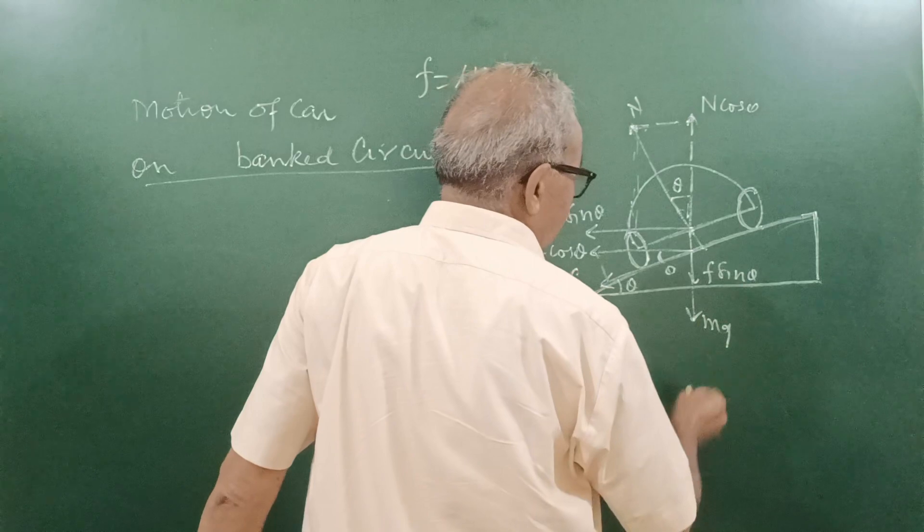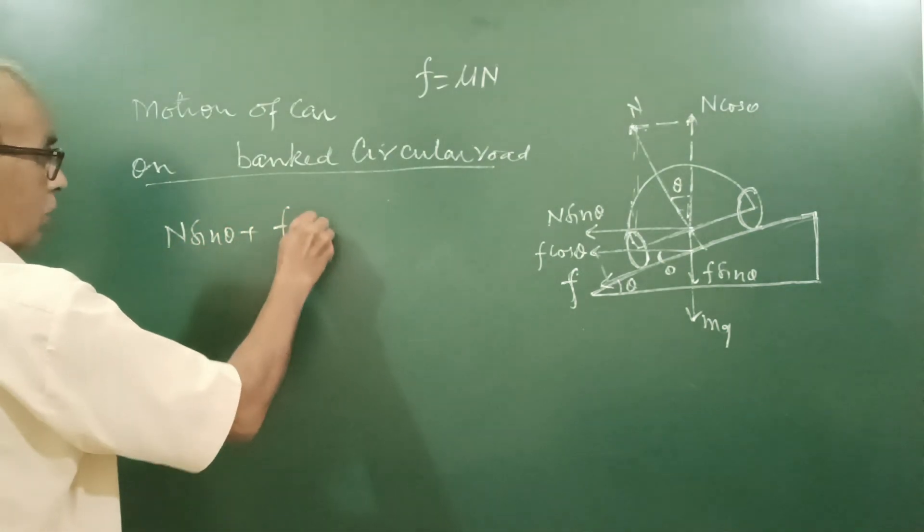So it is along radius towards the center. So the road is moving like this. So centripetal force is horizontal. N cos theta is acting opposite to mg plus f sin theta. So here N sin theta plus f cos theta together provide necessary centripetal force.